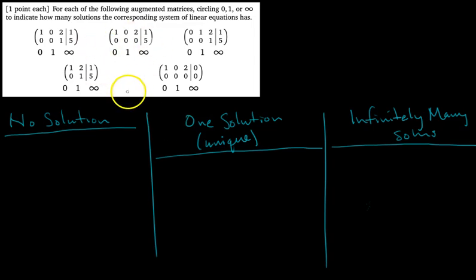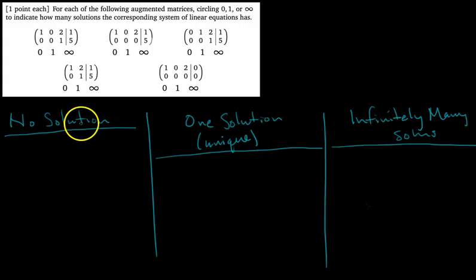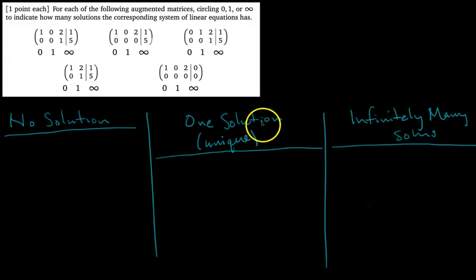Here's a question from a recitation quiz. We have five different augmented matrices that each represent a different linear system of equations, and we want to find out for each matrix whether its corresponding system has zero solutions, one solution, or infinitely many. A key fact about linear systems is that it can only have no solutions, one solution, or infinitely many — never exactly four, for example. If it has at least one solution, it's either one or infinitely many.